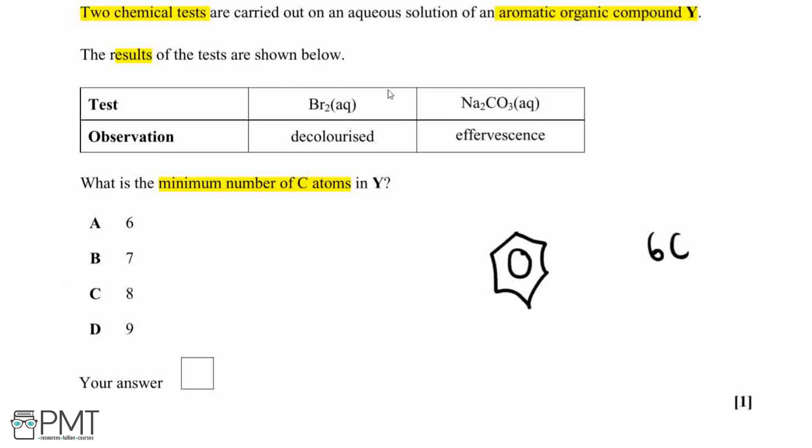First off, our first test is that bromine water has been decolourised. Now we know that benzene alone does not decolourise bromine water because it's not electron dense enough to induce a dipole in the bromine, so it can't react with bromine unless there is a halogen carrier. But what we do know is that phenol, which has added electron density, can decolourise bromine because it can induce a dipole and doesn't need a halogen carrier.